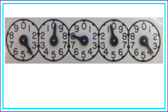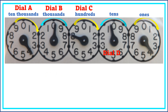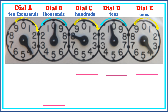Read and interpret the dials on the electric meter as presented. The rightmost dial is the ones place, followed by tens, hundreds, thousands, and ten-thousands — these are dial E, dial D, dial C, dial B, and dial A. Start reading the dials from right to left. In dial E, the pointer is almost reaching number four but not exactly on four, so we record the lower number, which is three.